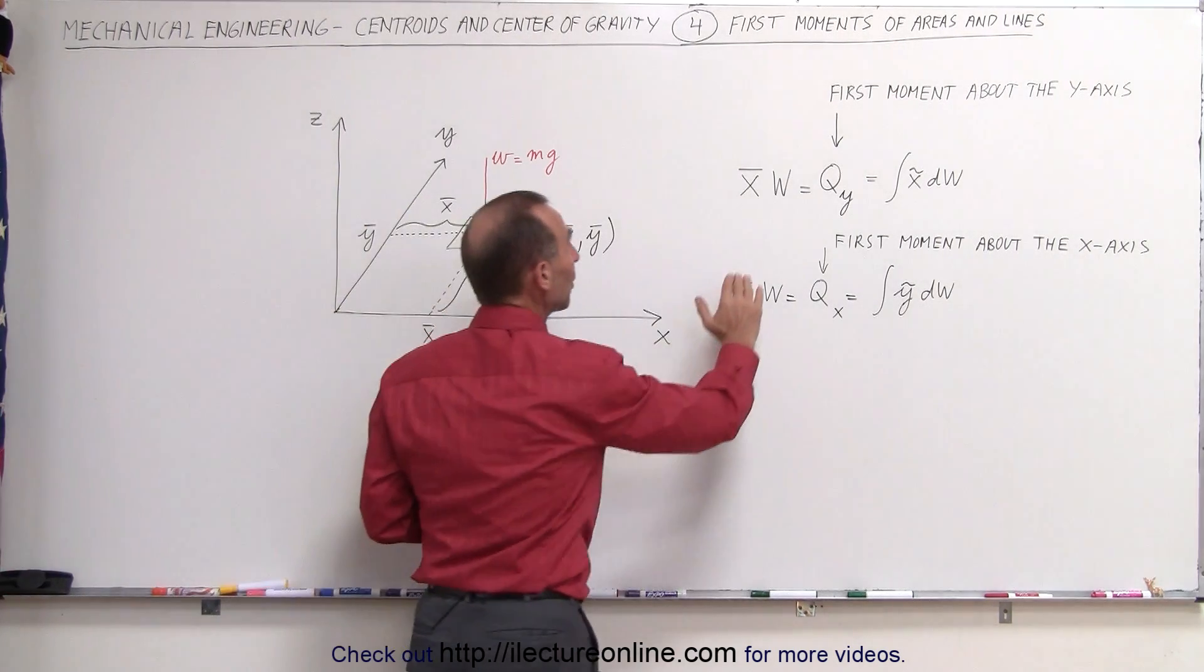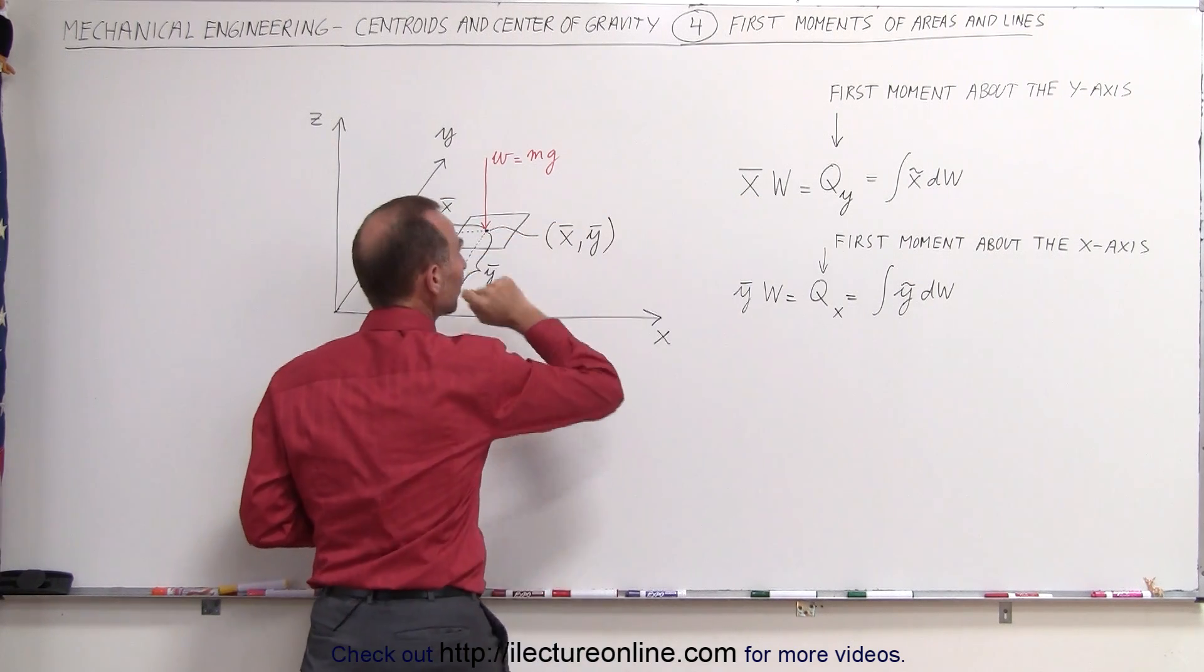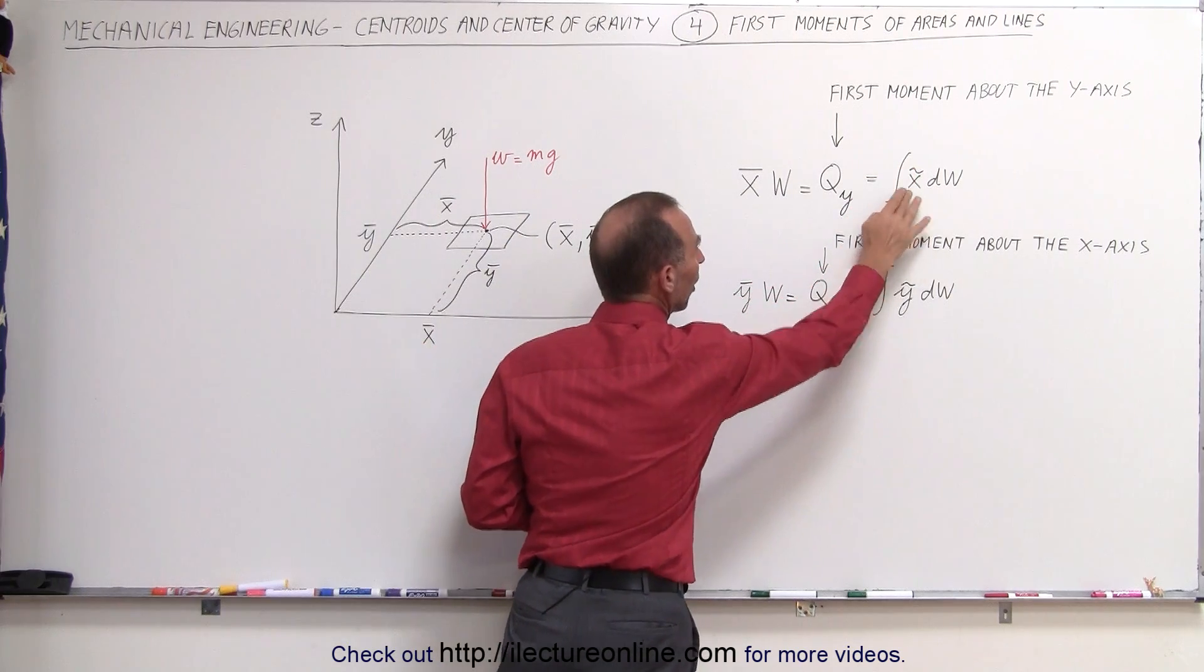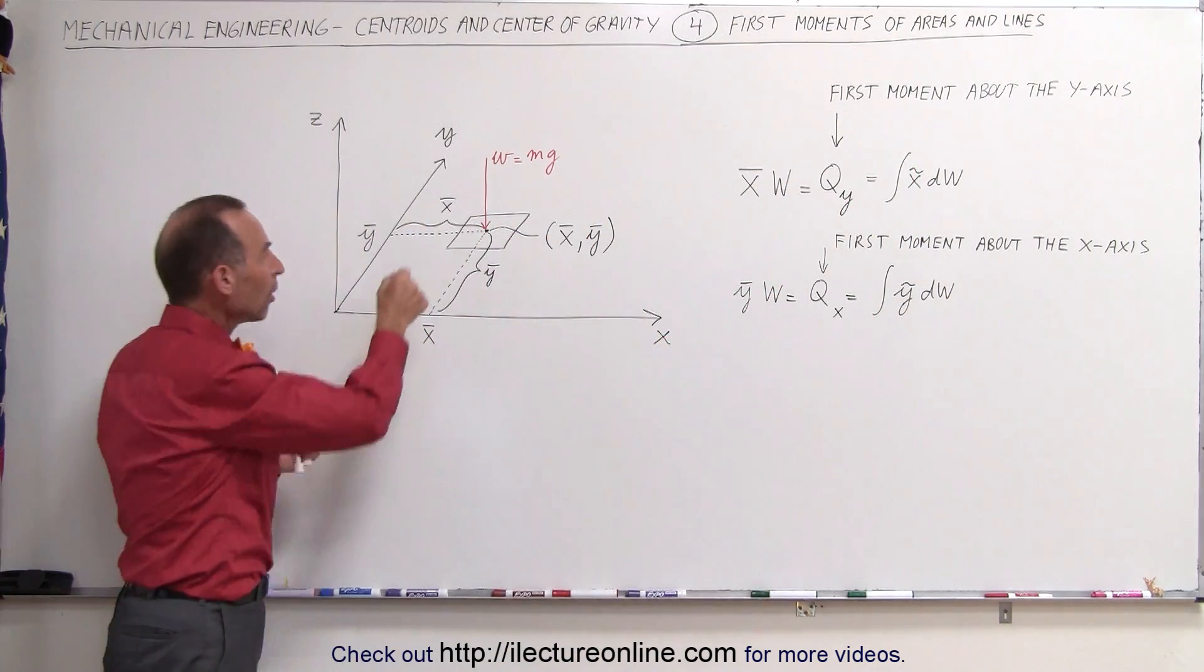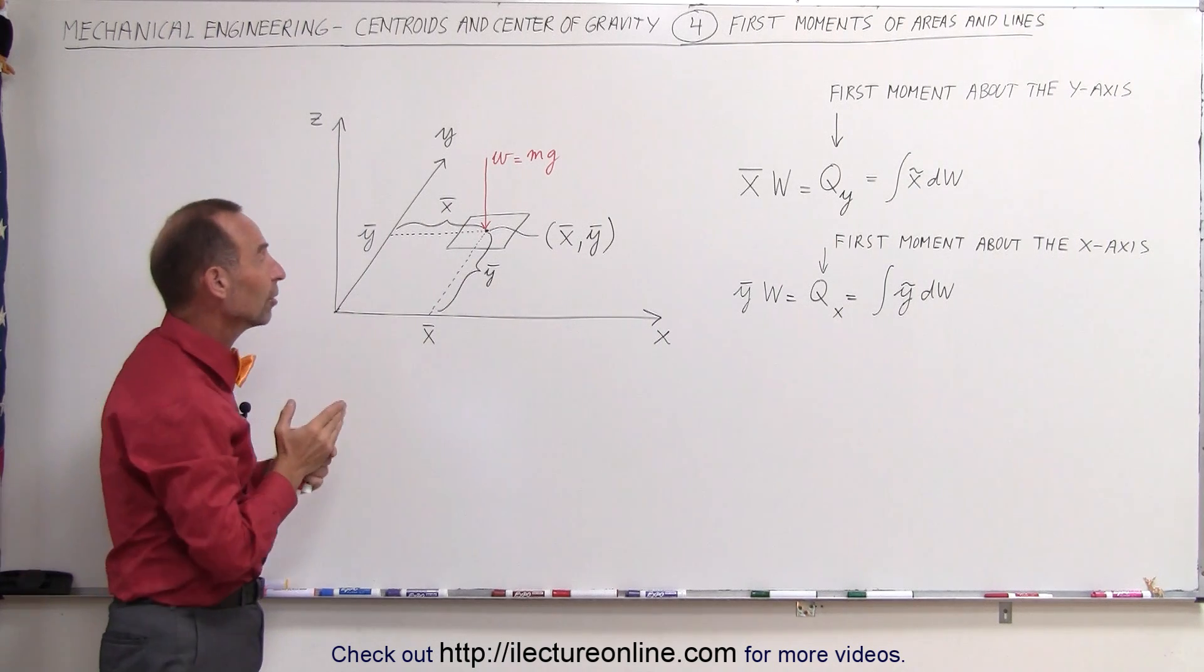Remember again the equation: when we take the center of the x-coordinate of the center of gravity of the object, multiply times the weight, we know that's equal to the integral of the center of gravity of the small little pieces of which we divided, times the weight of each little piece.